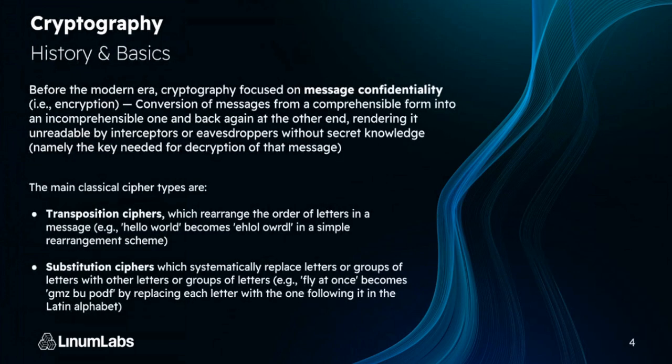Cryptography used to focus on message confidentiality through encryption, where a message would be converted from a readable form into an incomprehensible form. At the other end, once it reaches the intended recipient, it goes back to a readable form. This makes it readable for the two parties intended to read the message, but unreadable by anyone who intercepts it. A transposition cipher rearranges the order of letters in a message — so 'hello world' becomes something rearranged like that.